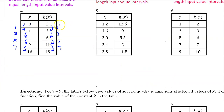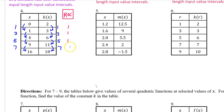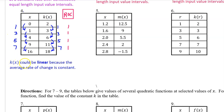For number 4, here are the changes in the output values and the changes in the input values. We do not have consecutive equal length input value intervals this time, so we need to actually show the rate of change. The average rate of change on each interval is the change in output divided by the change in input, giving us 1, 1, 1, and 1. Because the average rate of change is constant, k of x could be linear.